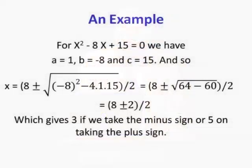For x squared minus 8x plus 15 equals 0, we identify a equals 1, b equals minus 8, c equals 15. Plugging in: minus b becomes 8, and the term under the square root is 64 minus 60, giving 8 plus or minus the square root of 4, all divided by 2. That gives 8 plus or minus 2 over 2, so x equals 5 or x equals 3.